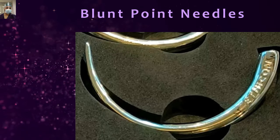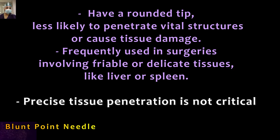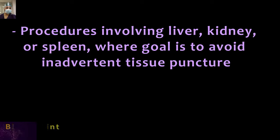Blunt point needles: the tip of the blunt point rounded body needle — all blunt point needles are round body. Blunt point needles are completely blunt to minimize unintended injury to viscera and the surgeon's hand during abdominal wall closure, as it dilates rather than cuts through the tissue. These needles are used during surgery on very delicate tissue like spleen, liver, or kidney, where we want to avoid injury. As we insert the needle, it should not injure any other vital structure — so there is minimal collateral damage. The blunt point will dilate its path rather than cutting it.